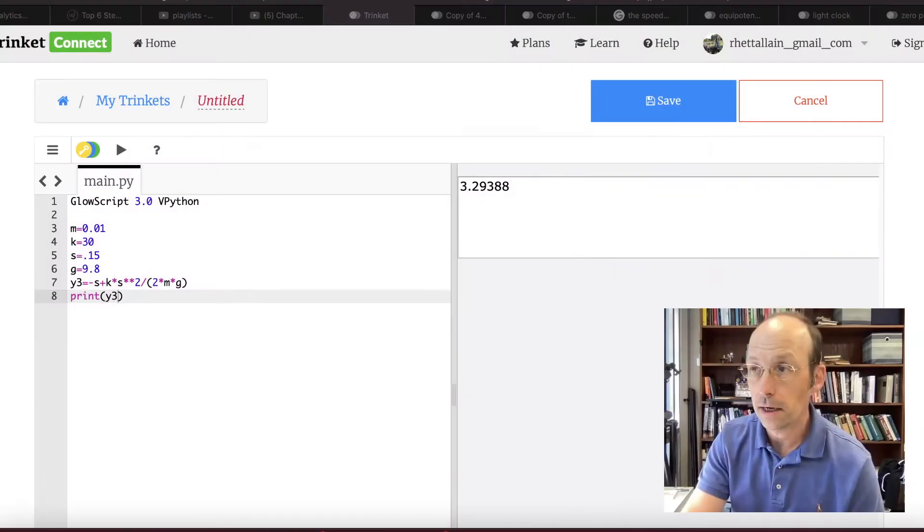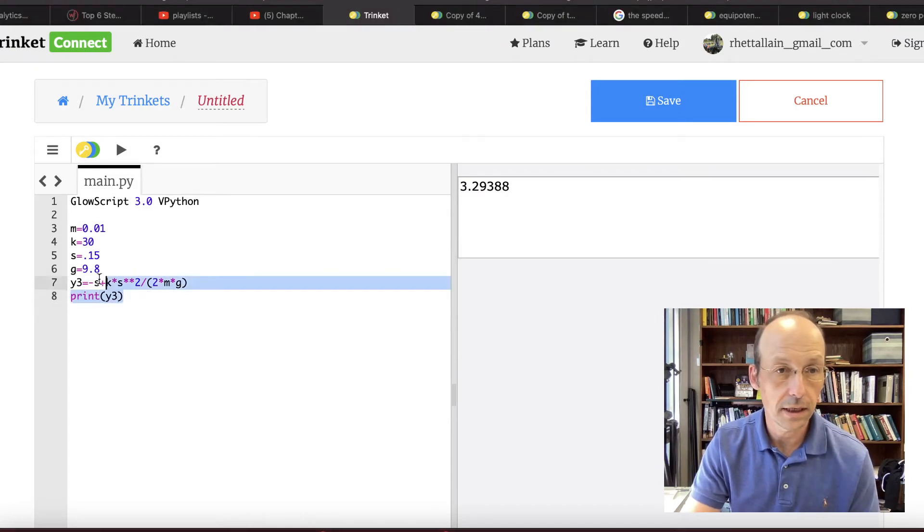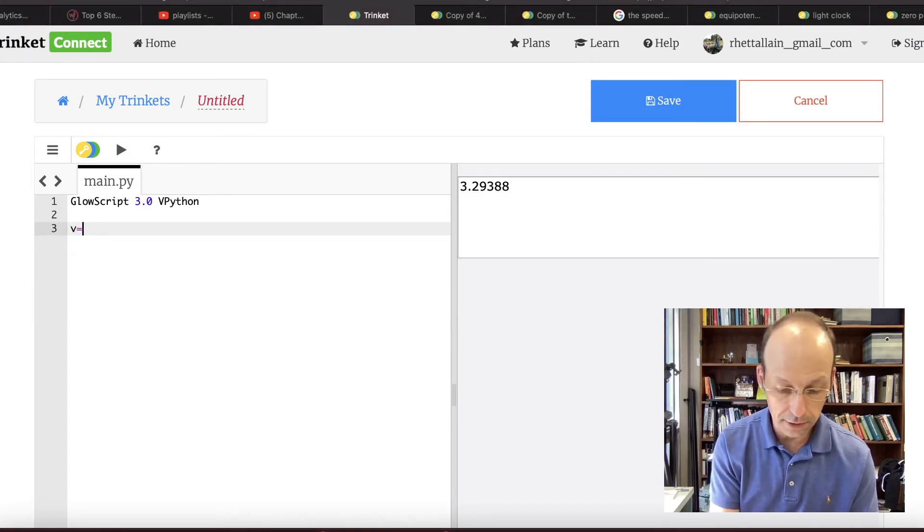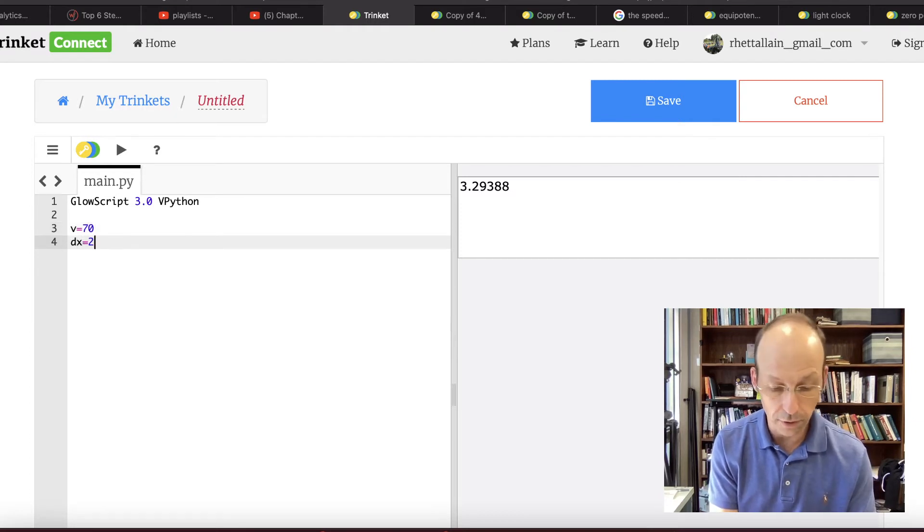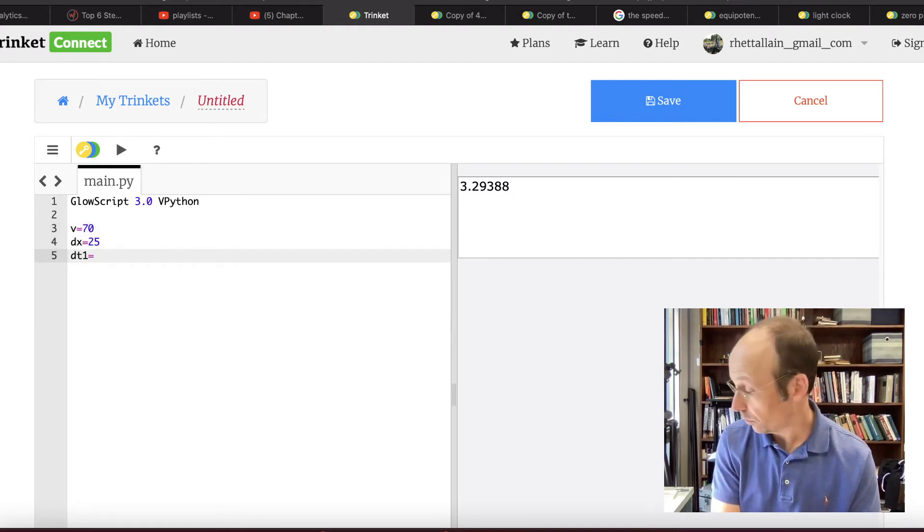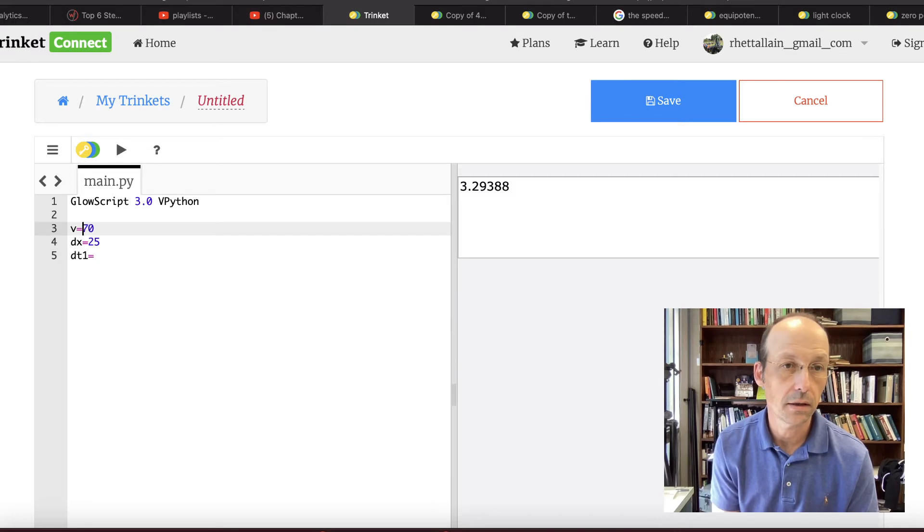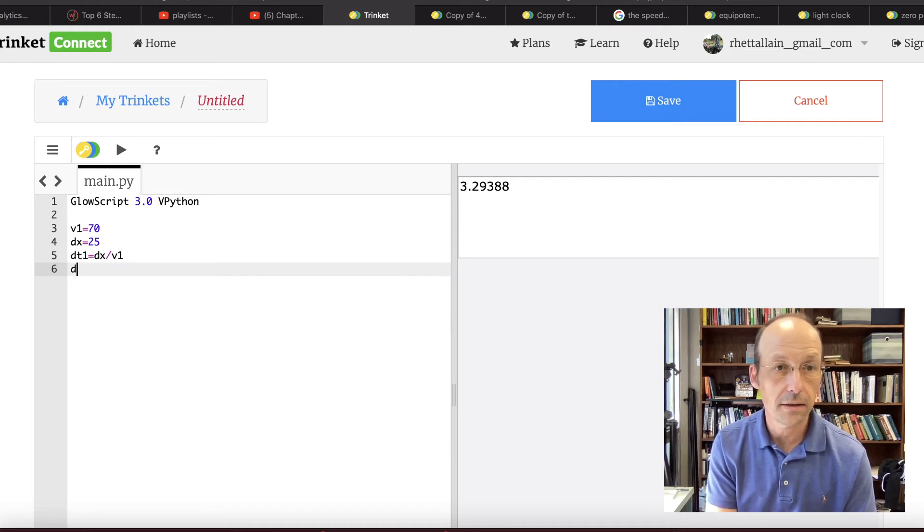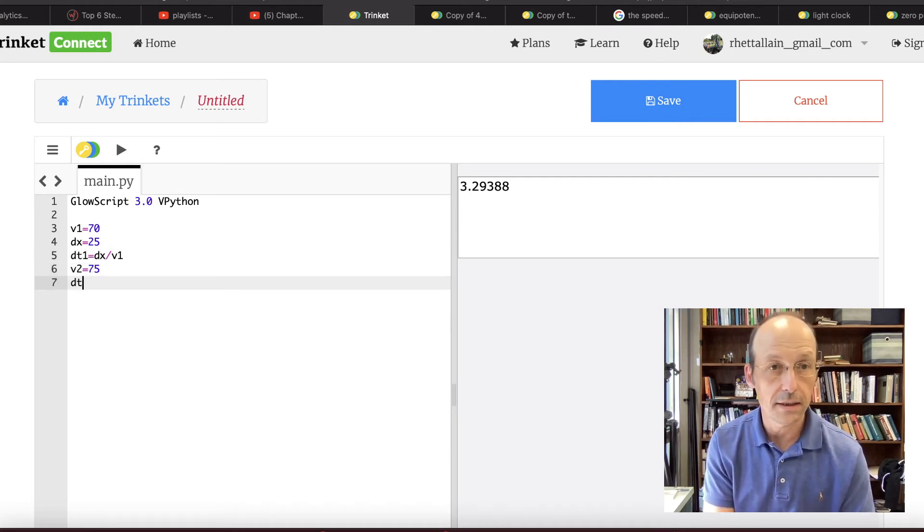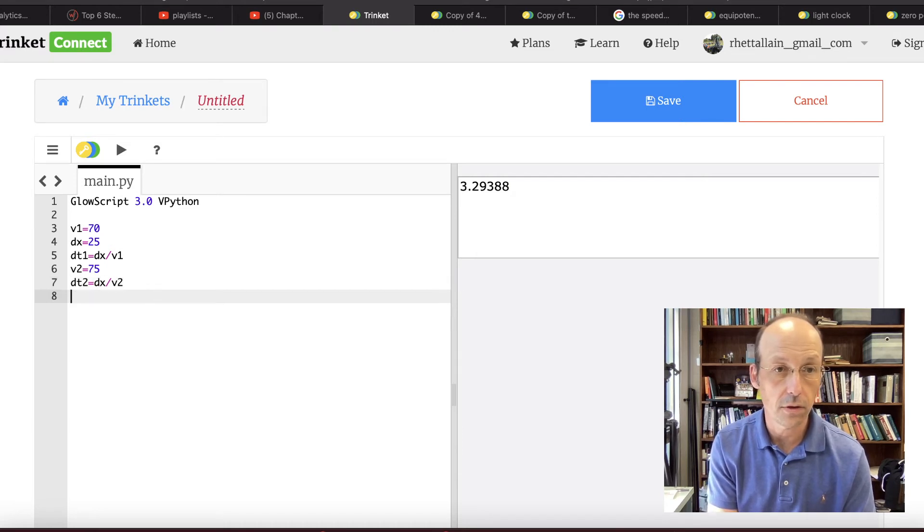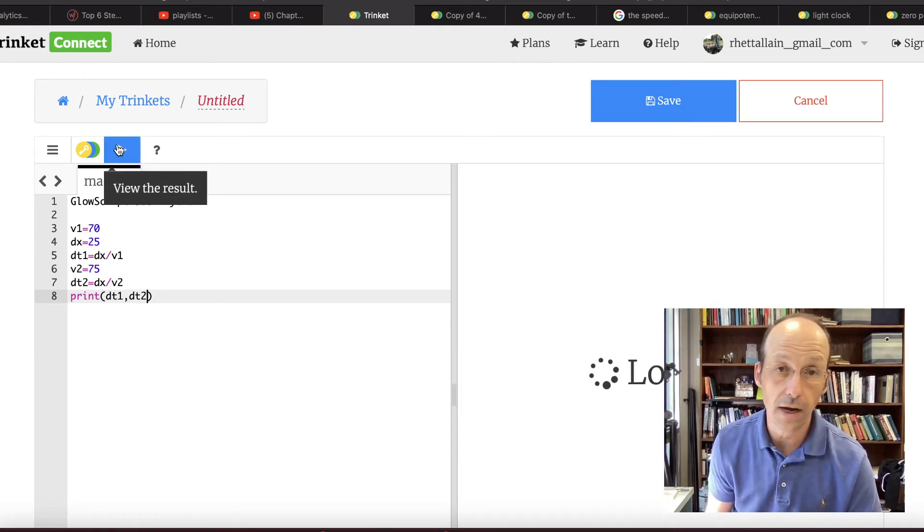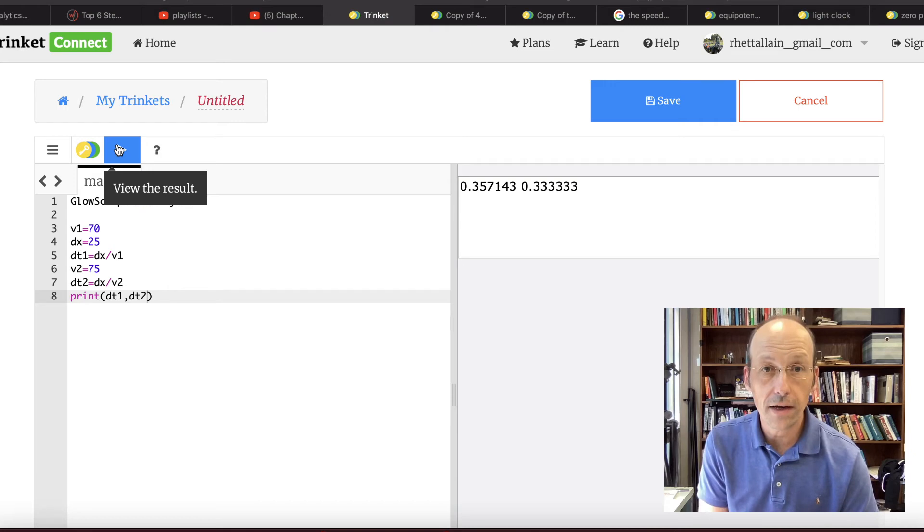So I'll switch over here to Python, my favorite. Okay. So let's say v1 equals 70. dx equals 25. dt1 is going to be equal to 25. Oh, that's v1. It's going to be equal to dx divided by v1. dv2 equals 75. dt2 equals dx divided by v2. So let's just print dt1 dt2. And then this will be in units of hours. So I get 0.357 and 0.333 hours. So what's the difference?